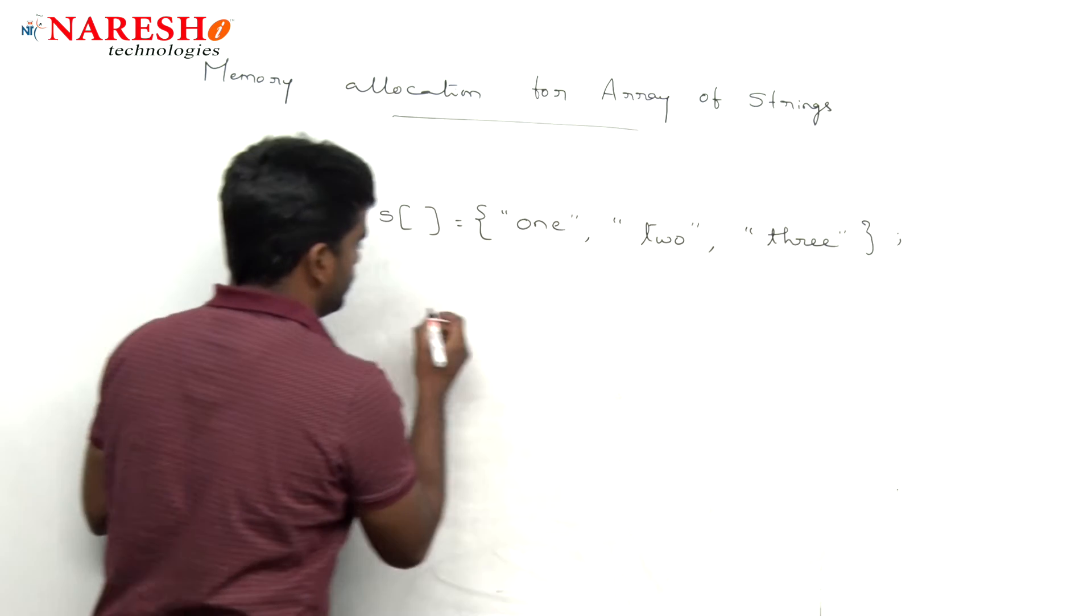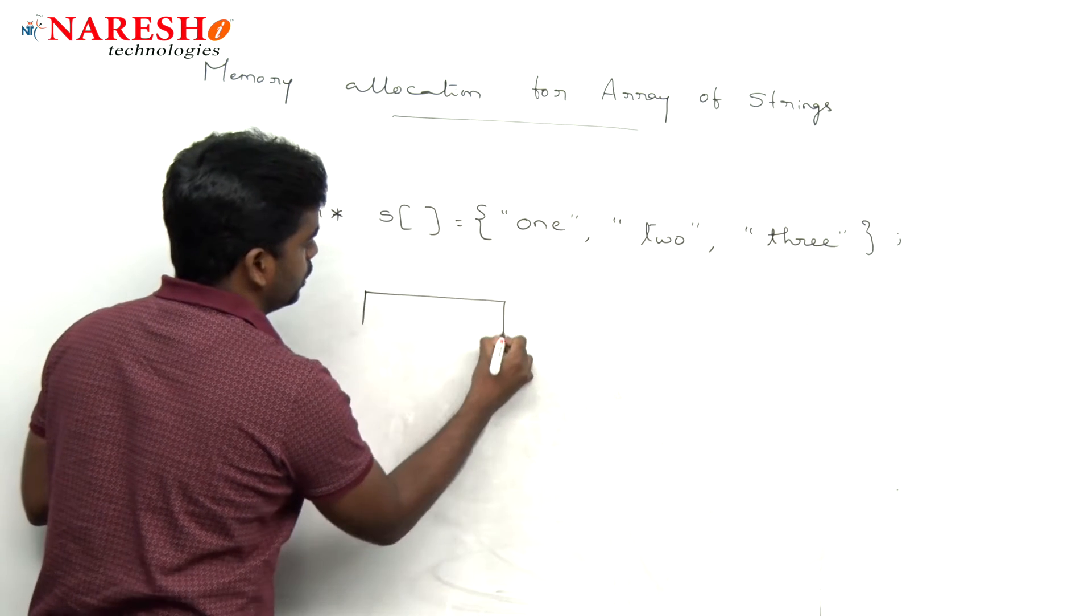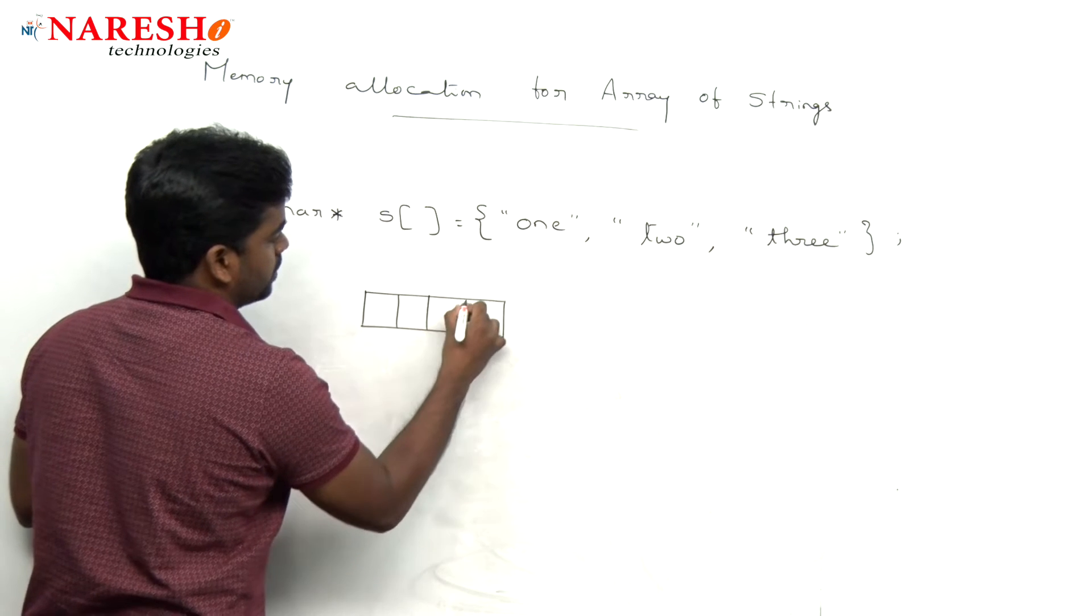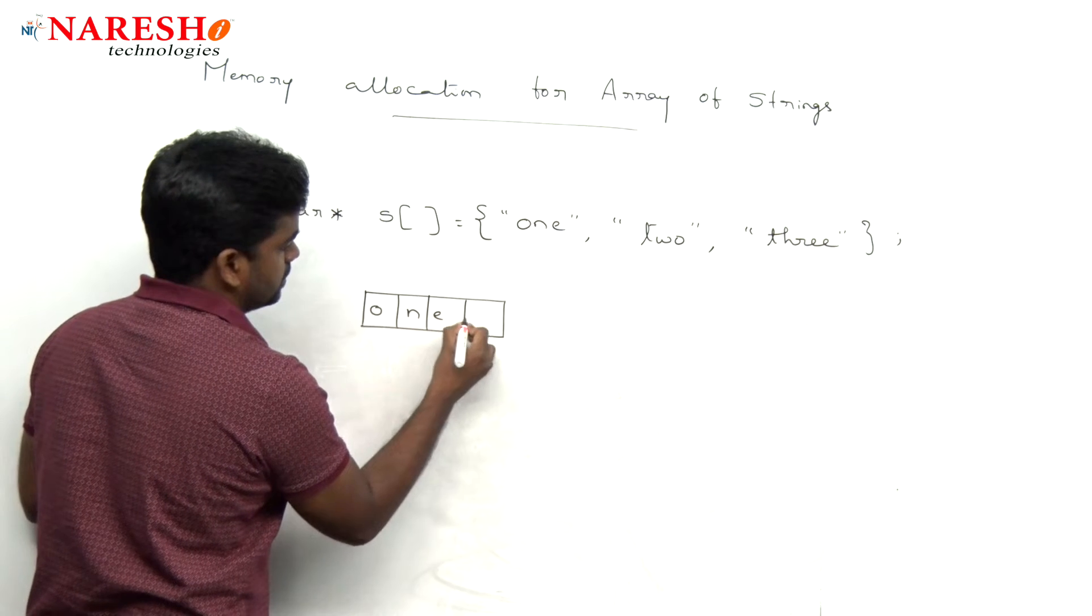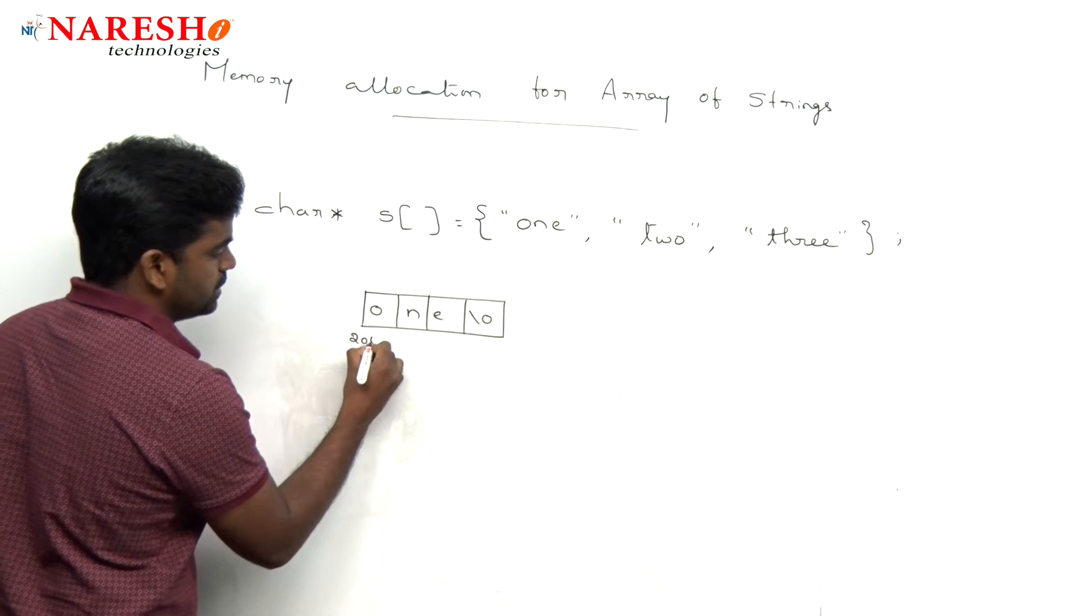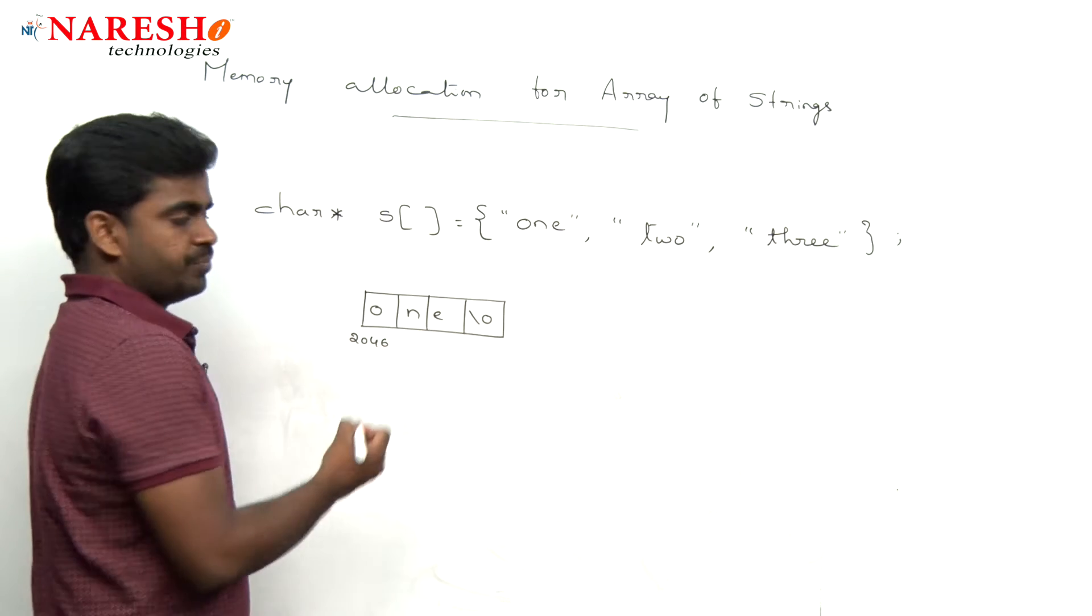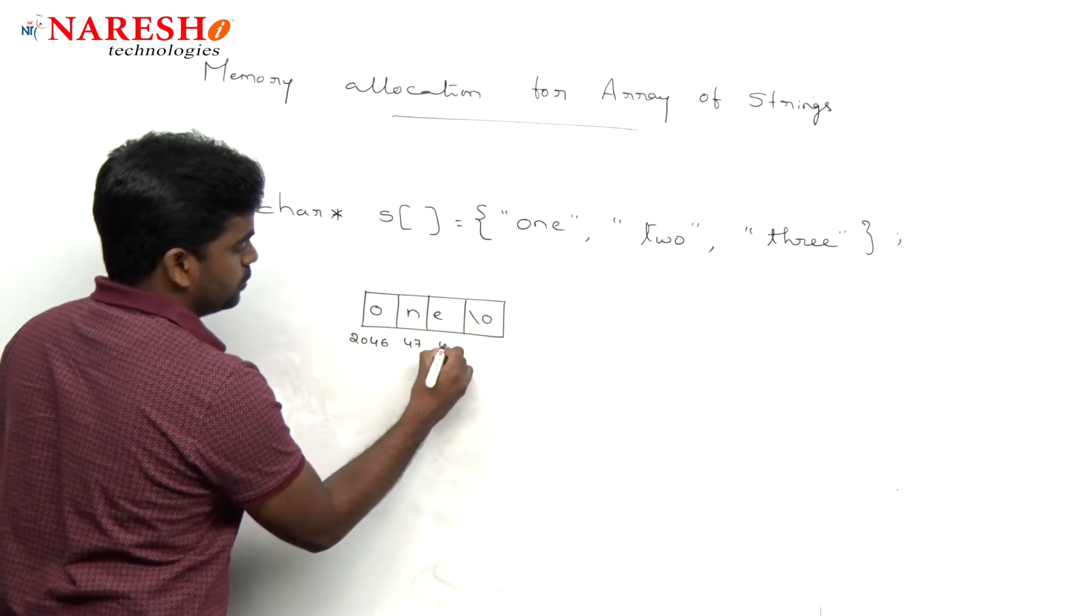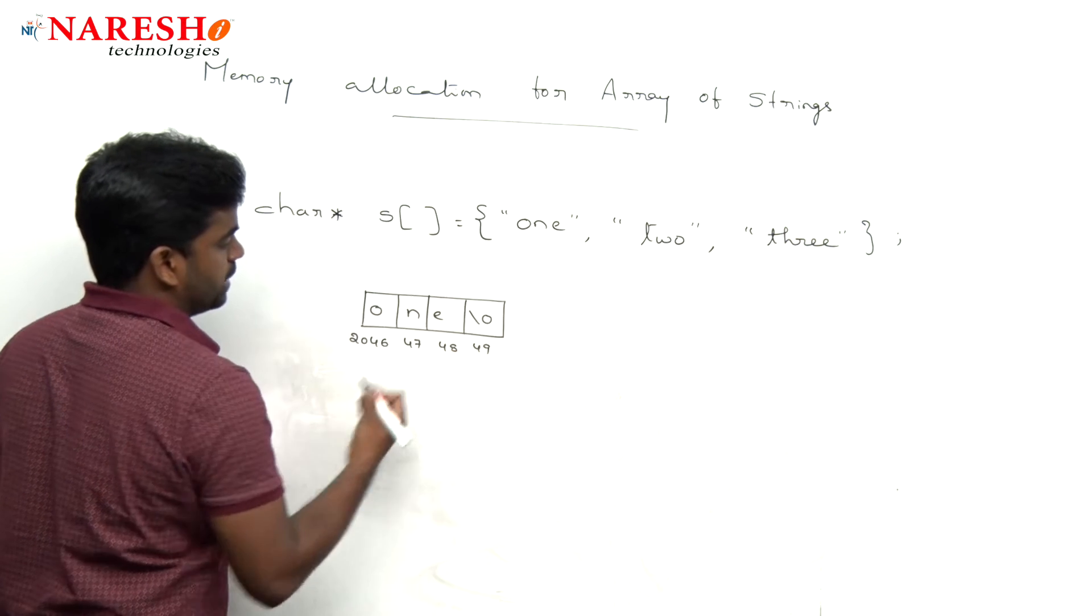First, these three strings get memory allocation at three individual locations and that last character is a null character. Memory locations, anything you can take. For example, is 2046. It is like 2047, 2048, 2049, like this.